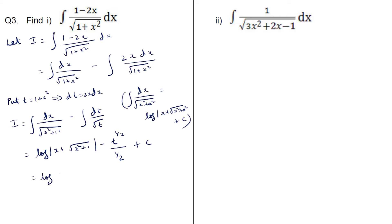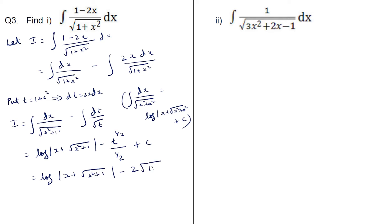This is equal to log mod of x plus root of (x squared plus 1), minus 2 into root of (1 plus x squared) plus c, after substituting t equals (1 plus x squared). So this is the integral of the given function.